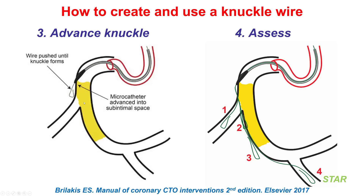Then one keeps advancing using orthogonal views. There are different outcomes similar to the CrossBoss: the guide wire can go into a side branch, stay inside the lesion, reach the distal sub-intimal space, or sometimes reenter into the distal true lumen. If reentry is very distal, that is usually not desirable because of high rates of restenosis. This is essentially the STAR technique described by Antonio Colombo.